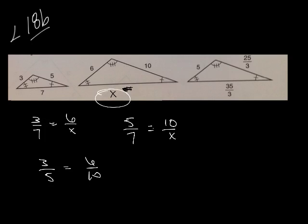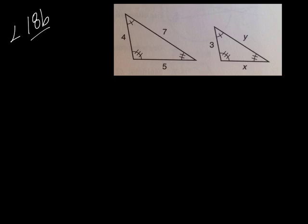So let's go ahead and look at example 18.3. So for this one, we're trying to find out the value of x and y. So I'm going to set up one proportion at a time in order to do that. So I'm going to look at my 4 and my 5 and compare it to my 3 and the x. So 4 is to 5 as 3 is to x.